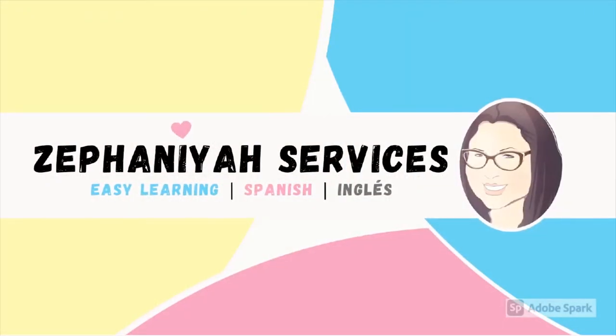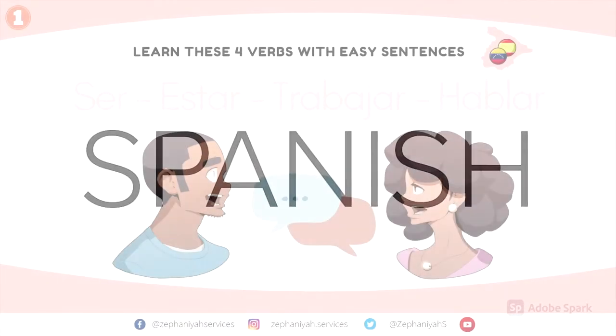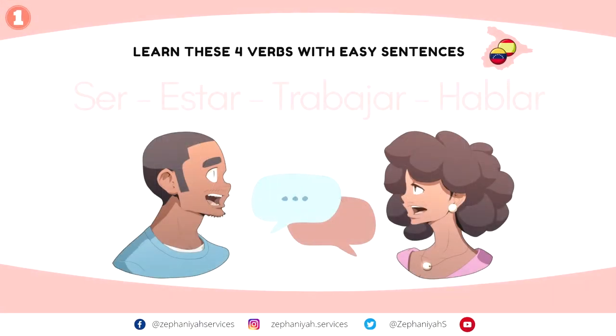Hola, bienvenidos a Cefanaya Services, Easy Way to Learn Español. Today we're going to learn how to make simple sentences with four different verbs. Are you ready? Let's go! Learn these four verbs with easy sentences: ser, estar, trabajar, hablar.